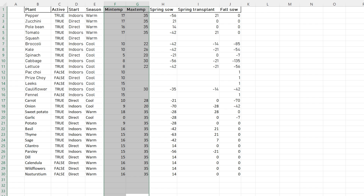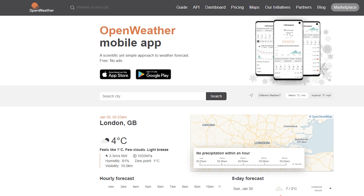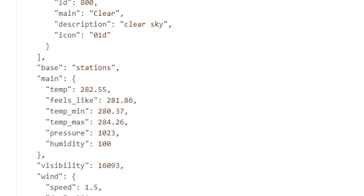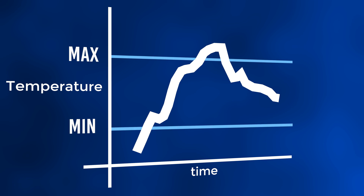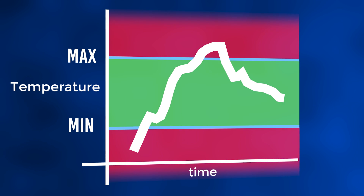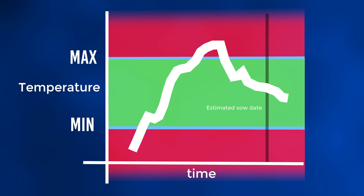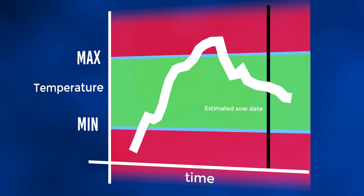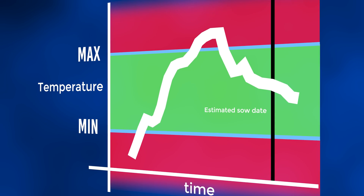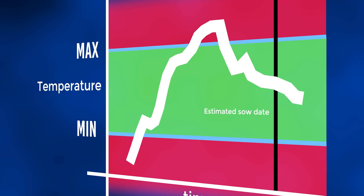My first idea was to add two columns storing temperature preference, and then use an online service like Open Weather Map to tell me the minimum and maximum temperature every day. Then I could compare those temperatures to the plant preferences and represent that visually in the calendar, allowing me to also check whether or not the past few days have been within an acceptable temperature. There are a few problems with this approach, though.